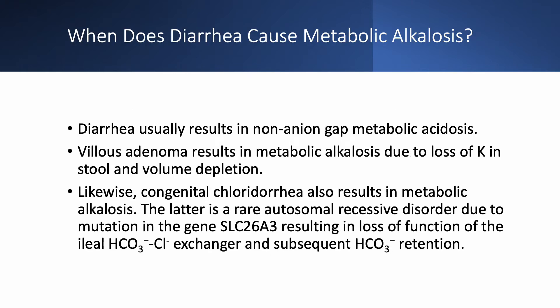When does diarrhea cause metabolic alkalosis? As a general rule, diarrhea should make you think non-anion gap metabolic acidosis. Rarely, in patients with villous adenoma or congenital chloridorrhea, you get metabolic alkalosis. In villous adenoma, there is loss of potassium in the stool, volume depletion, and alkalosis. In congenital chloridorrhea, a rare autosomal recessive disorder due to mutation in the SLC26A3 gene, there is loss of function of the ileal bicarbonate-chloride exchanger, resulting in retention of bicarbonate and secretion of chloride, causing chloride-rich diarrhea.